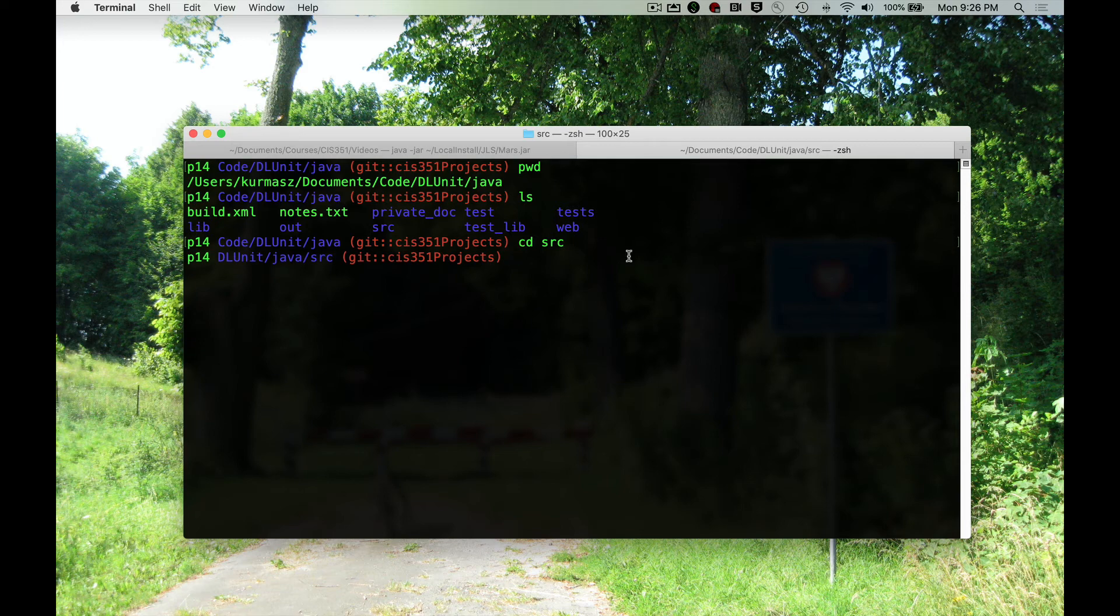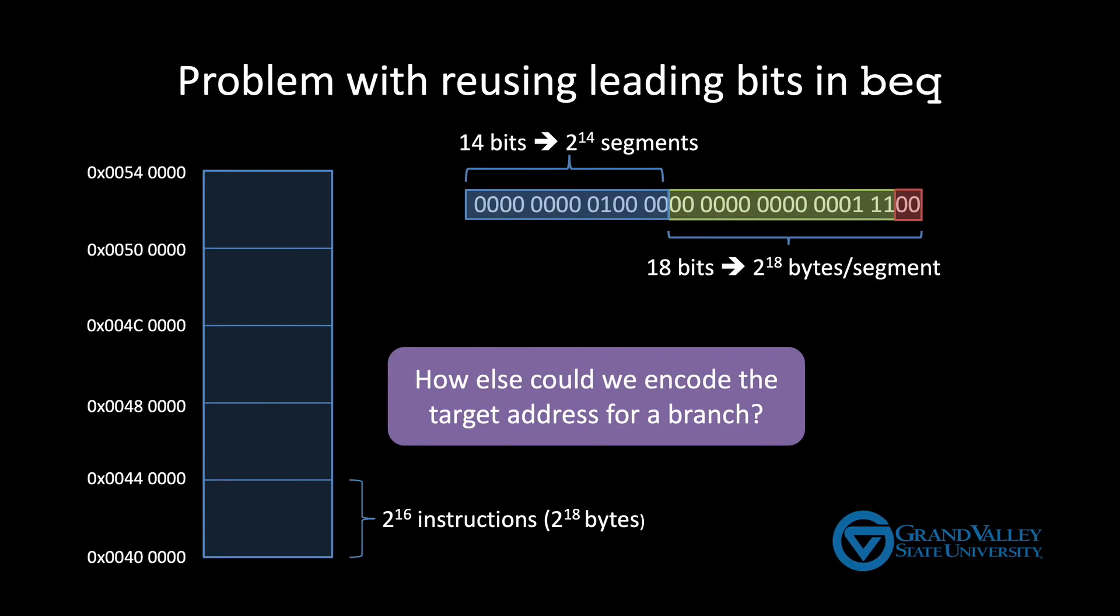Now I want to run the Java compiler, but reference a jar file in the lib directory. So I have two choices. I could type out the absolute path name of that jar file, which is a little bit long and tedious. Or instead of an absolute name, I can just use a relative path name. I can say go up a directory, go over to the lib directory and get me jls.jar. So how can we use this concept of absolute and relative paths to find a better way of encoding the target address for branch instructions?